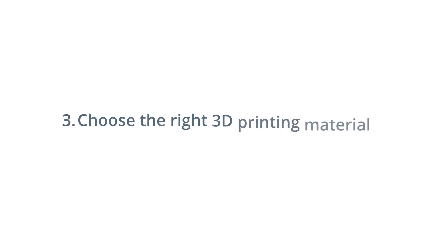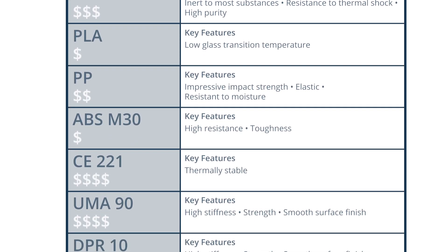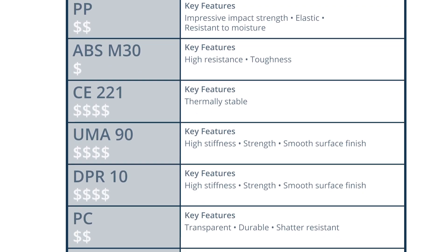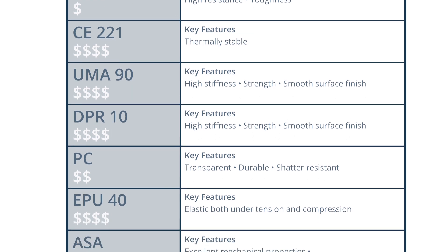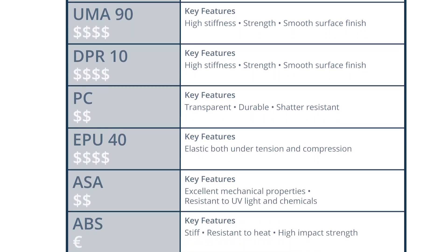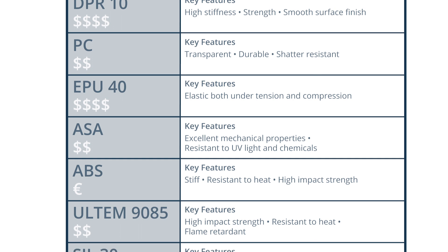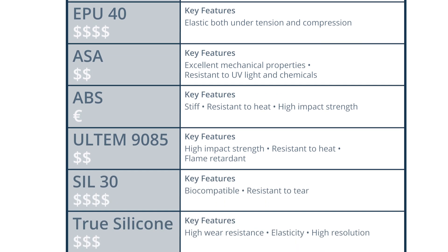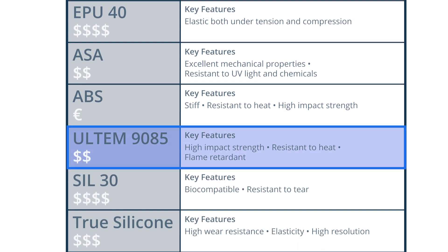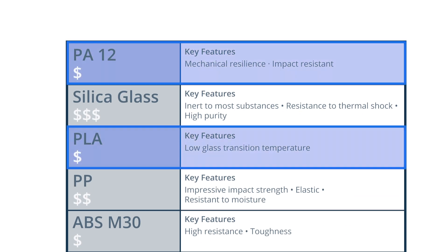Number three: choose the right 3D printing material. Select the most suitable material based on your requirements. For example, if the part you are printing is just a visual model, chances are you don't need an expensive material like clip resins used in DLS technology. Materials with good performance — strong, heat resistant, etc. — like Ultem are more expensive than widely used materials like PA12 or PLA.